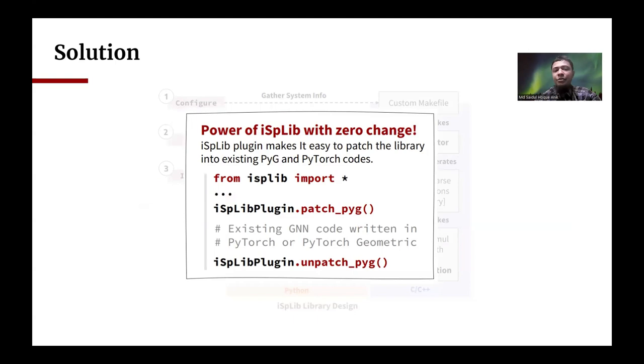And the best thing is that if the users have existing PyTorch Geometric implementation of GNN, they can start using the library out of the box with just two lines of code.